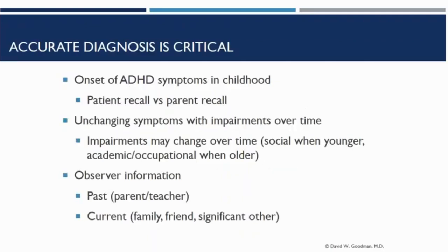How do you establish that? Part of that is patient recall, but also it's getting information from other observers to get historically accurate information. Typically a parent might report symptoms in childhood. However, if the parent has ADHD, they may not have recognized them. So even the parent's recall of symptoms may not be accurate. A patient's diagnosis may get missed simply because the interviewer says, 'Your mom or dad said you didn't really have these symptoms,' yet the course of the patient's symptoms and impairments are very typical for ADHD. The symptoms are unchanging over the course of time.